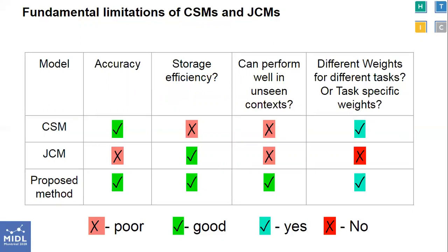CSMs cannot perform well on unseen contexts due to covariate shifts, and separate task-specific weights are obtained for each context. On the other extreme, we have joint context models, wherein images from as many contexts as possible are taken and the model is trained once on a large corpus of training data from multiple contexts. For JCMs, the accuracy is not as good as CSMs, but they are memory efficient because one common weight set is learned for all contexts. JCMs also do not perform well on unseen contexts. In our work, we show that the proposed method inherits the benefits of both CSMs and JCMs.